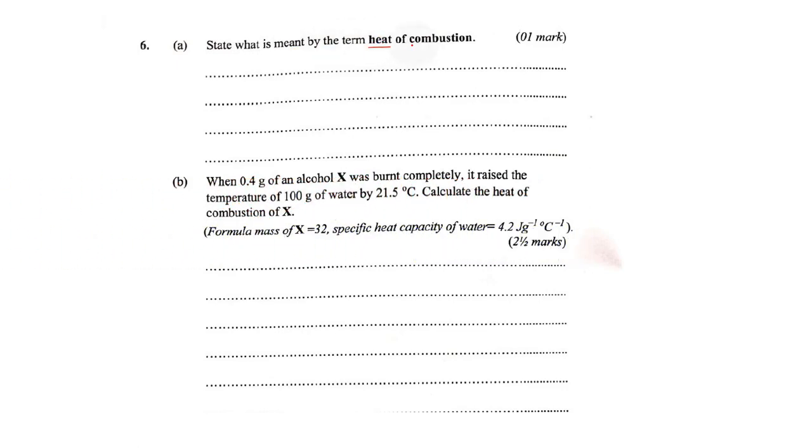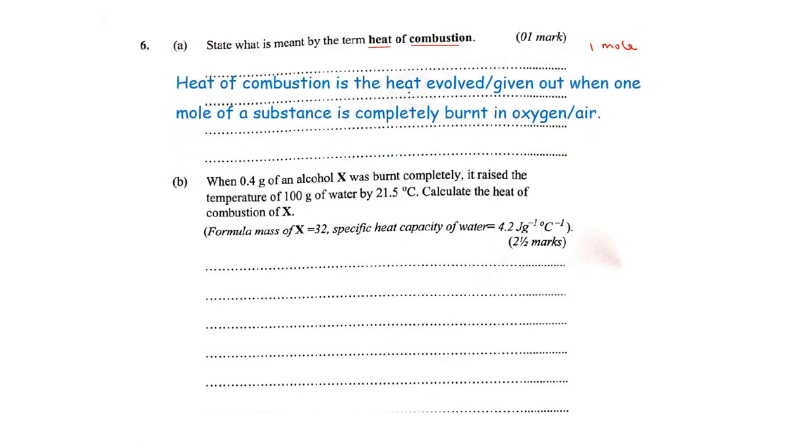Now usually whenever we are trying to define different types of heat or energy changes, we try to always relate to one mole of a substance because we want to be uniform. So heat of combustion is the heat evolved or given out when one mole of a substance is completely burnt in air.